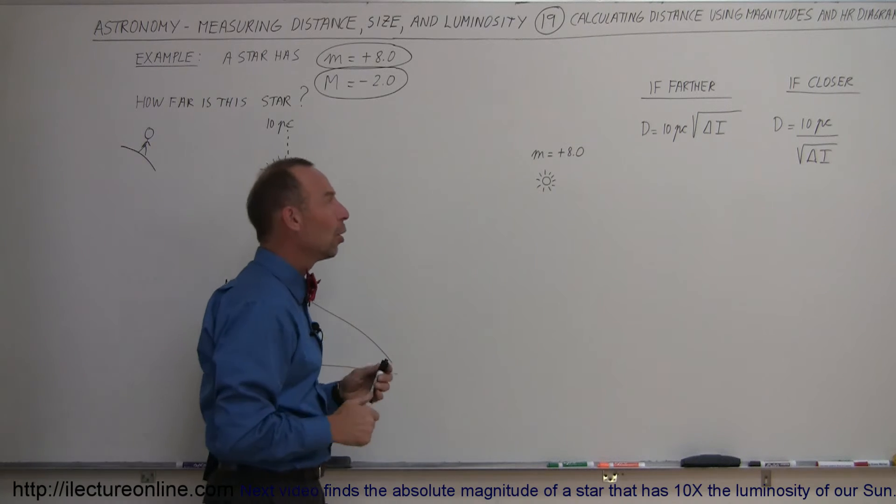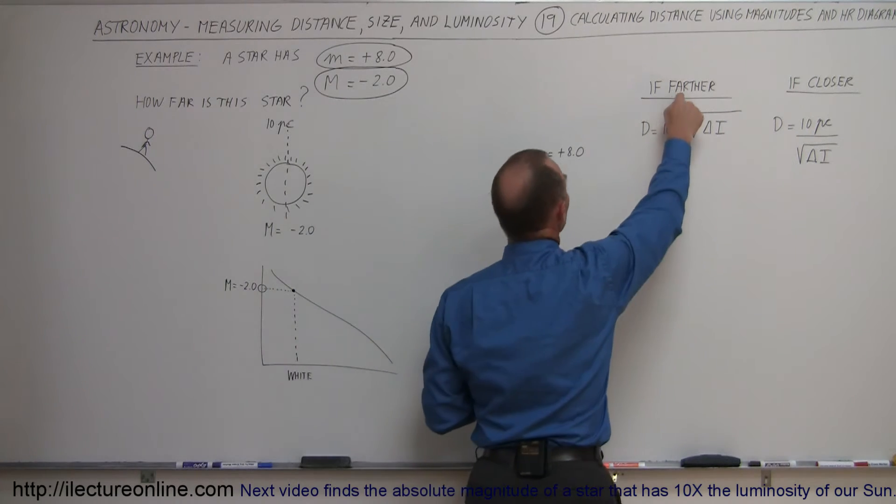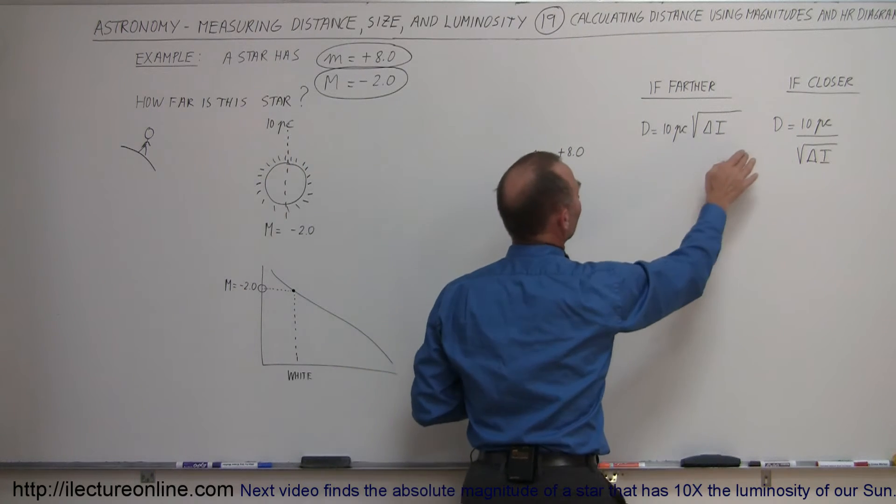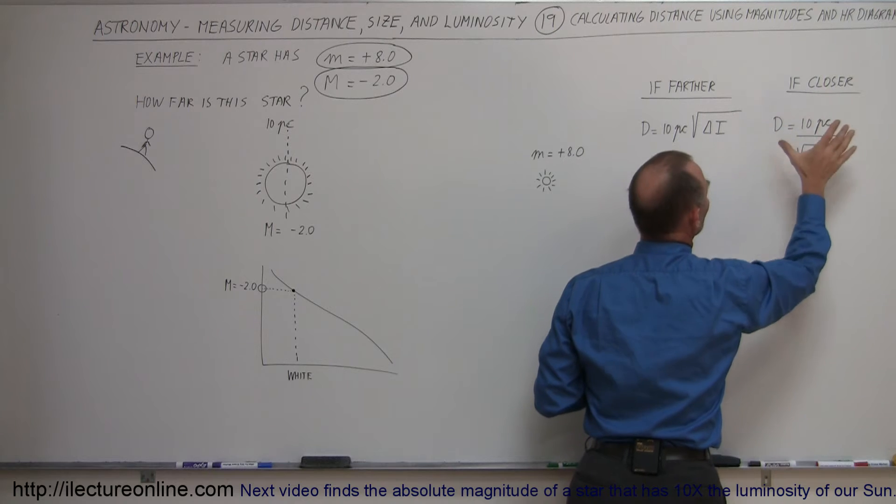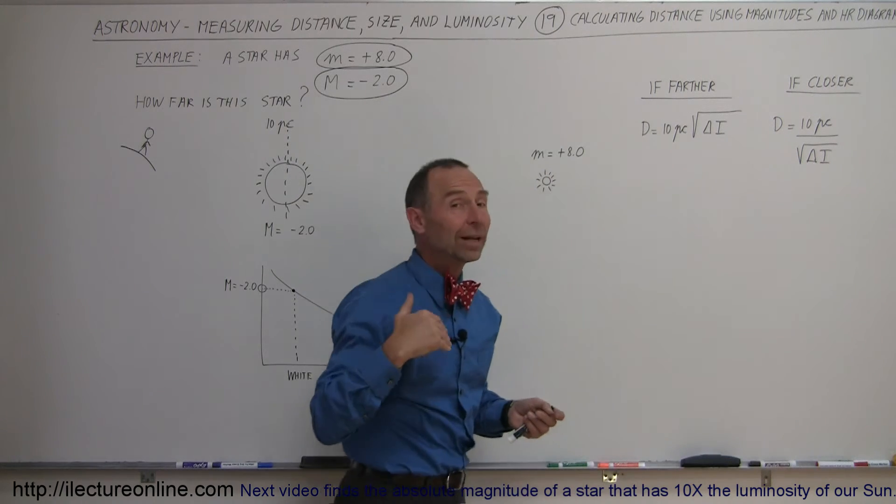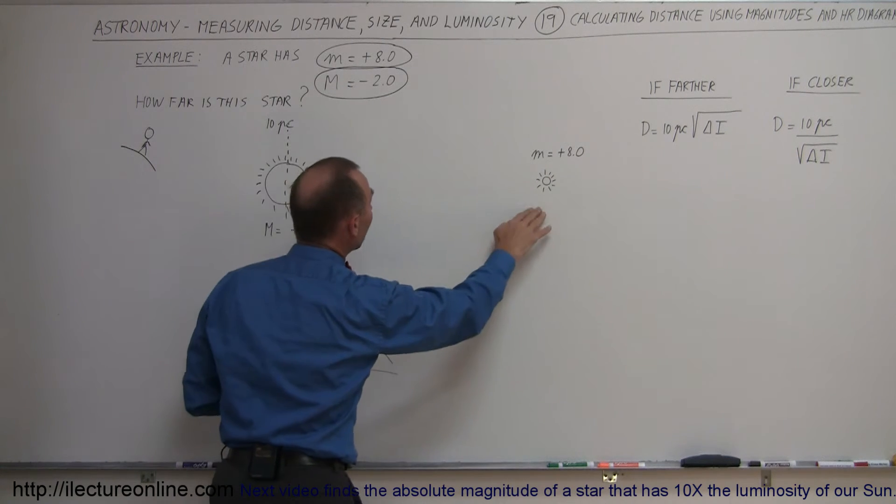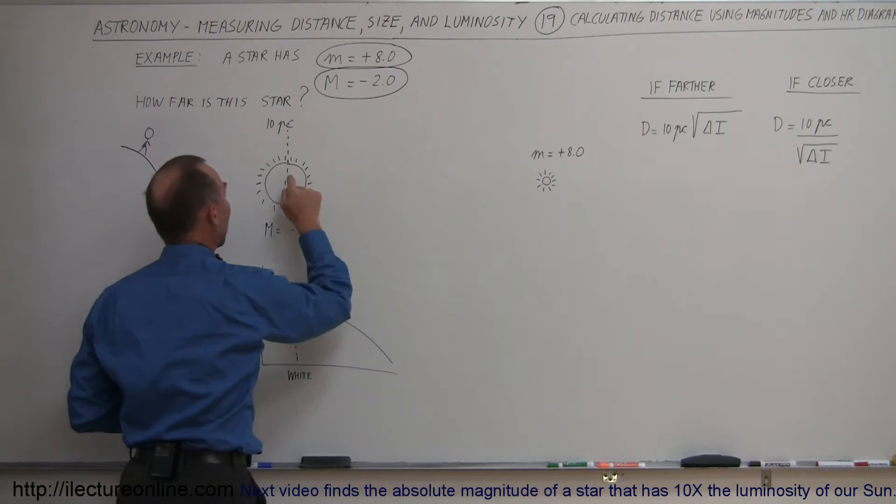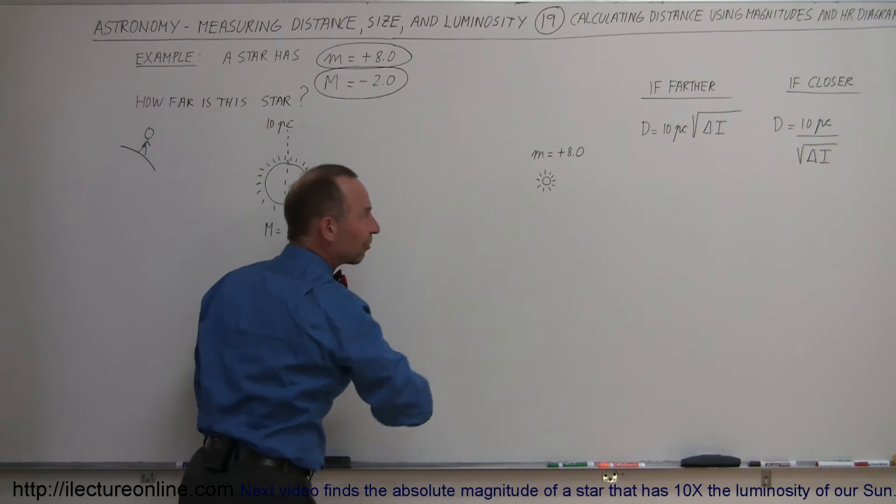So, how do you then calculate the distance? Well, if the star is farther away than 10 parsecs, you use this equation. If it's closer than 10 parsecs, you use this equation. But we already established it was farther away because the apparent magnitude is dimmer than the absolute magnitude. So we knew that it had to be farther away.